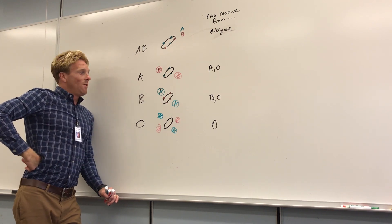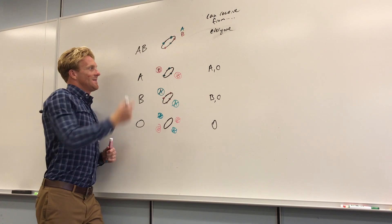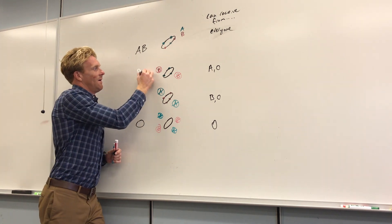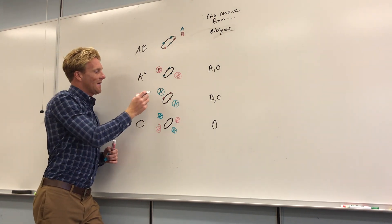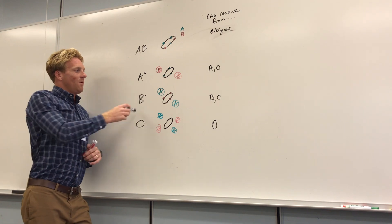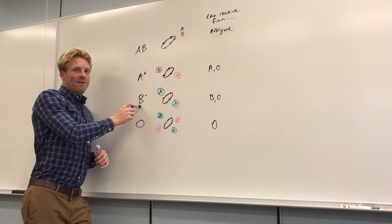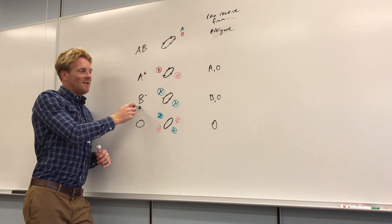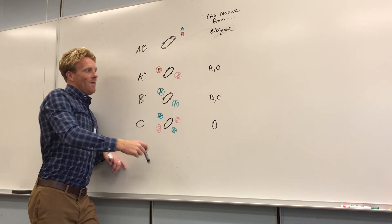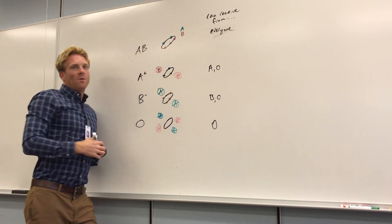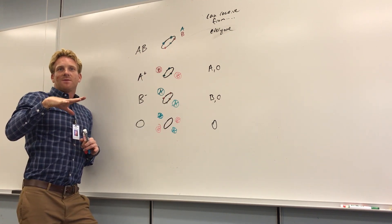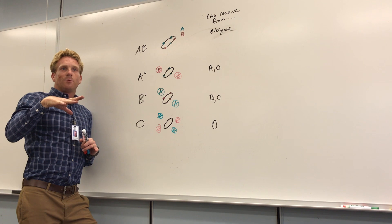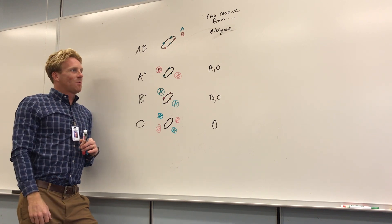So if someone is A positive, that means they contain the RH factor. If they're B negative, they lack it. People who are RH negative — for example, B negative — should only receive blood from other RH negative people so that the immune system doesn't become primed. It's not as much of a problem going the other way around.